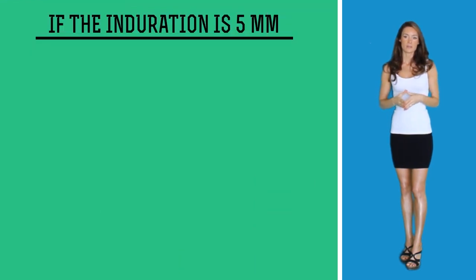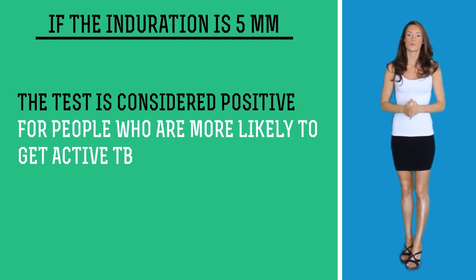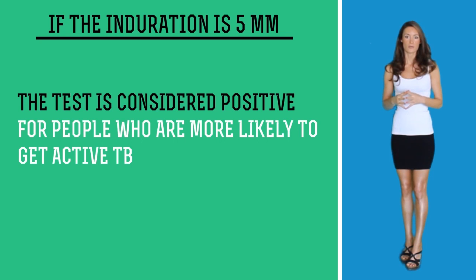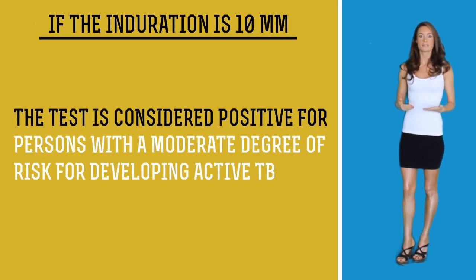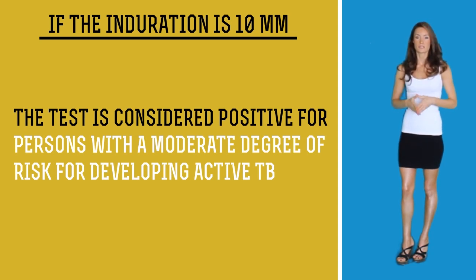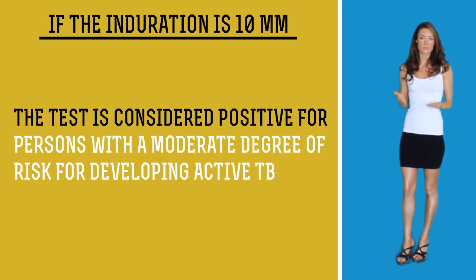If the induration is 5 mm, the test is considered positive for people who are more likely to get active TB — for example, those with a weakened immune system due to HIV, those taking medications like TNF-alpha inhibitors or corticosteroids or using 15 mg or more of prednisone per day, those who deal with TB patients on a daily basis, or those who have a history of TB. If the induration is 10 mm, the test is considered positive for persons with a moderate degree of risk for developing active TB, including people who work at prisons and refugee camps or work with immigrants from areas with high rates of TB.